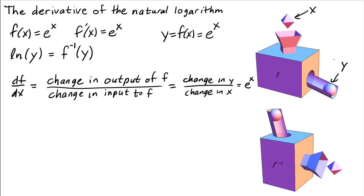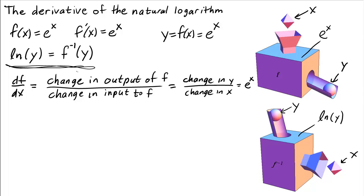Now let's try to do the same thing for the natural logarithm. If this function machine f represents e^x, then if we flip the function machine over and run it backward, we get f inverse, where the input is now y and the output is x. Running the function machine backwards undoes what the original function machine did, and this backward function is the natural logarithm. That's why we used y here.